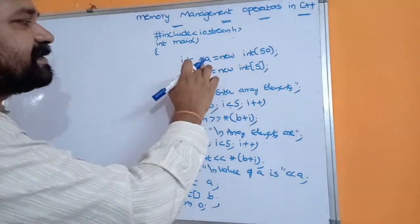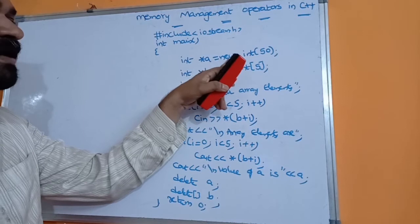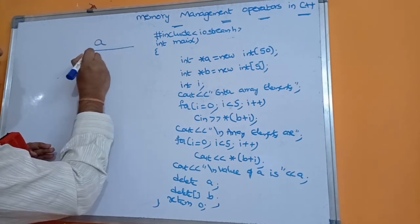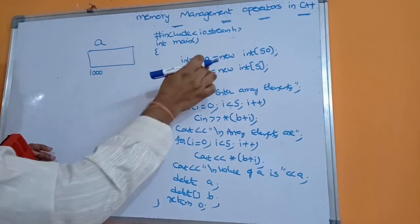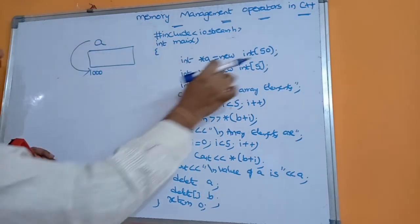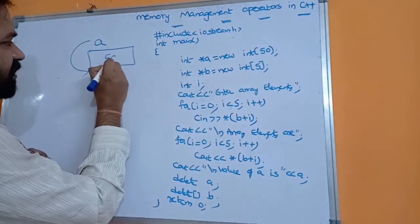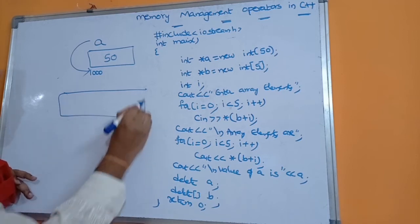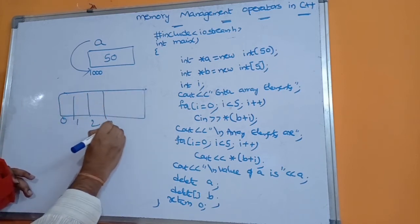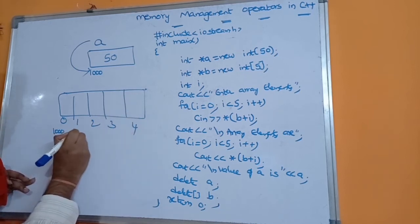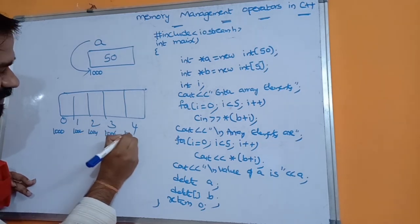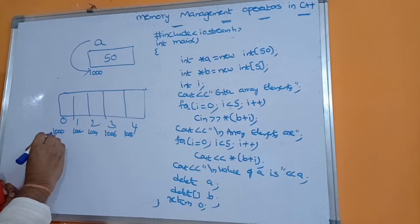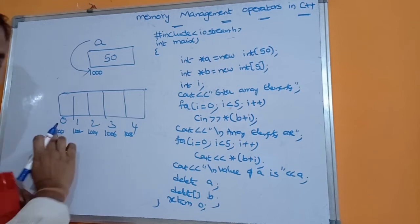Now let us see how this program gets executed. int *a = new int(50): here declaration, memory allocation, and initialization are done in a single statement. Let the address of a be 1000, so after allocating memory, a will point to that address, and the initial value 50 is stored there. Next, int *b = new int[5]: now we have 5 elements b[0] through b[4]. Let the starting address be 1000 with addresses at 1000, 1002, 1004, 1006, 1008. After allocation, b will point to the starting address 1000.